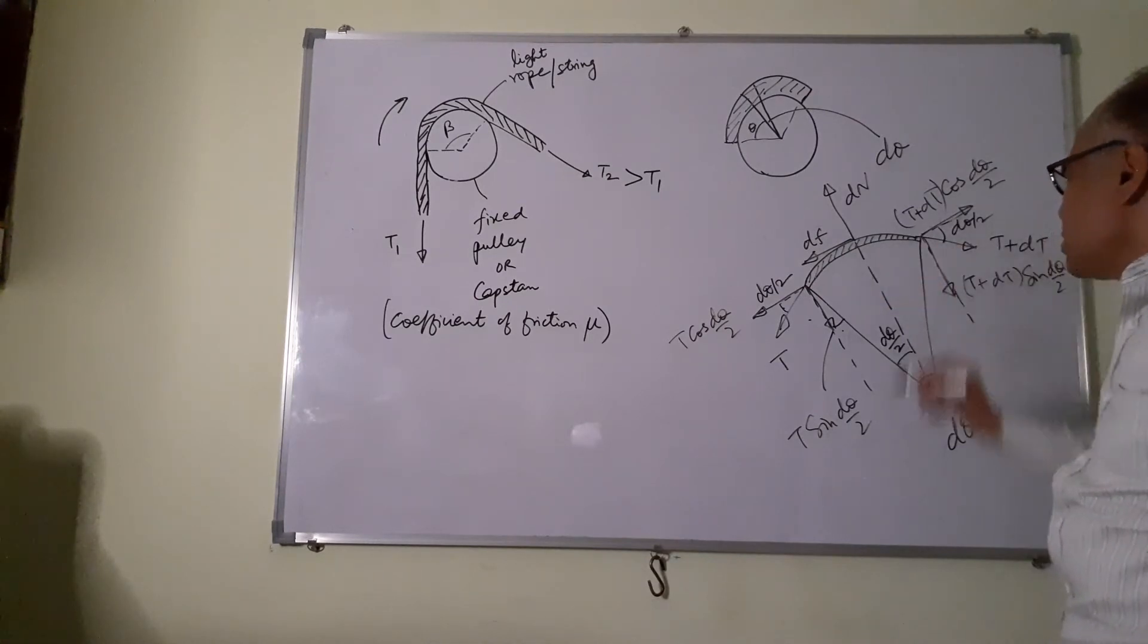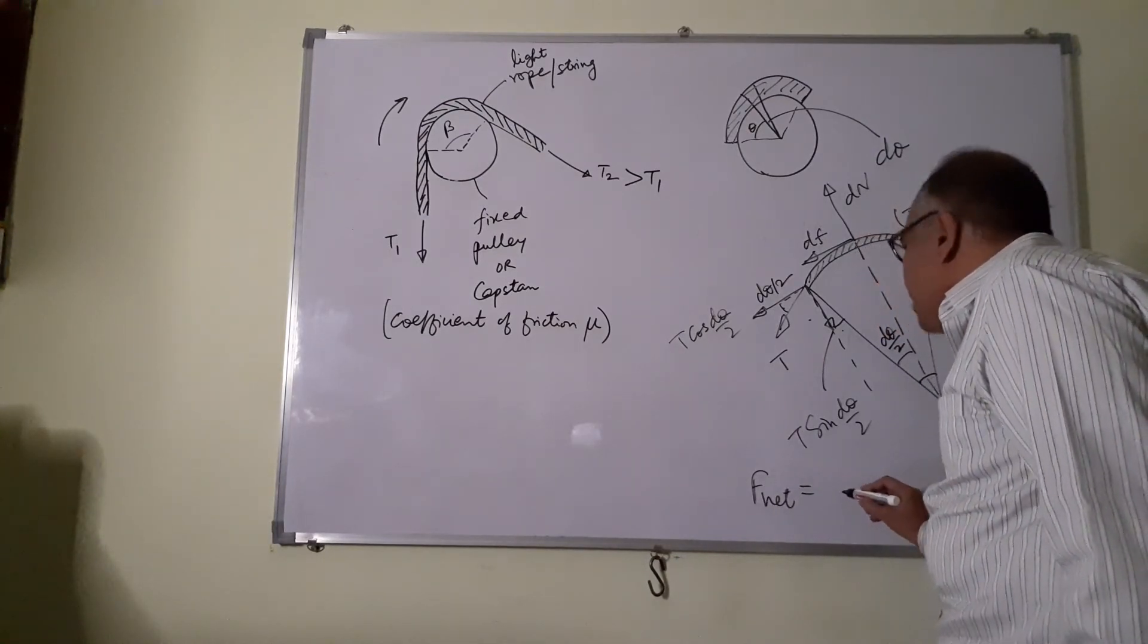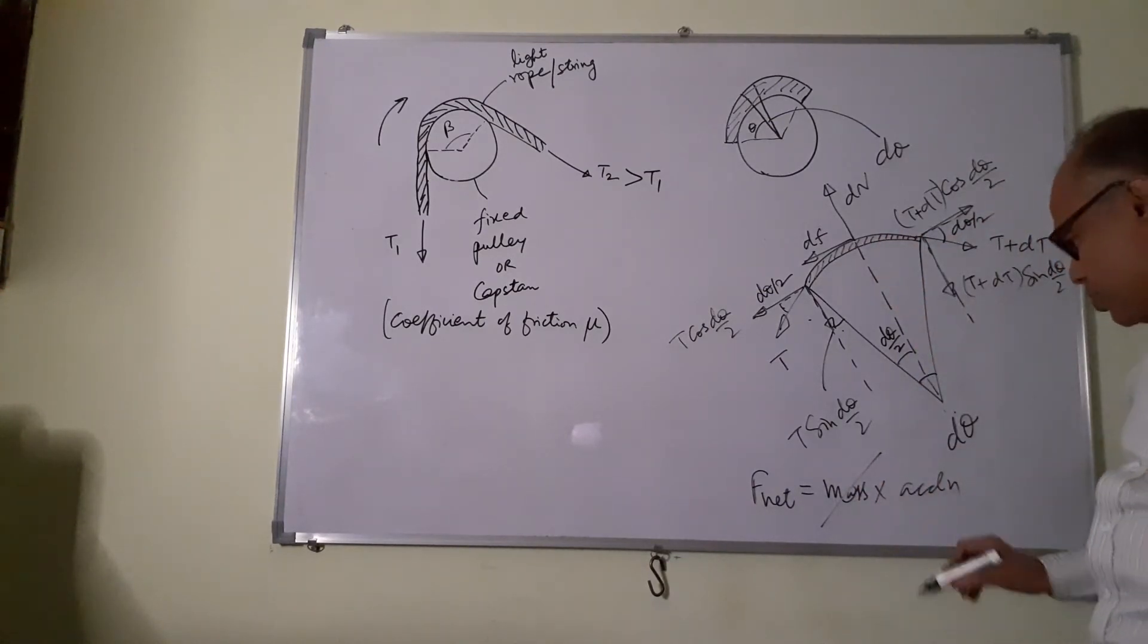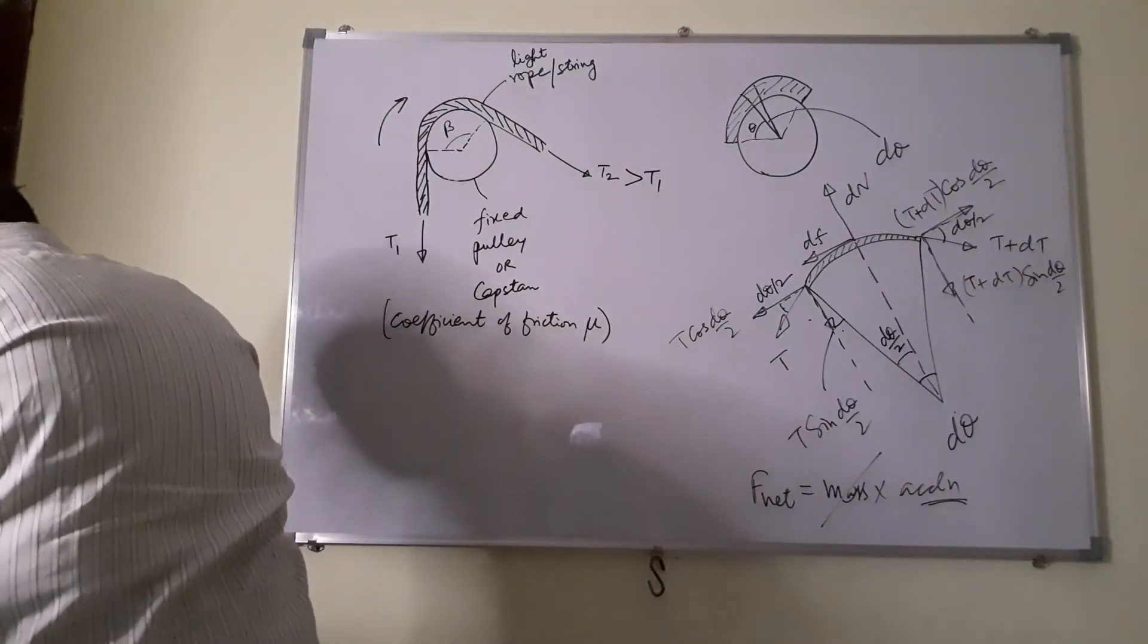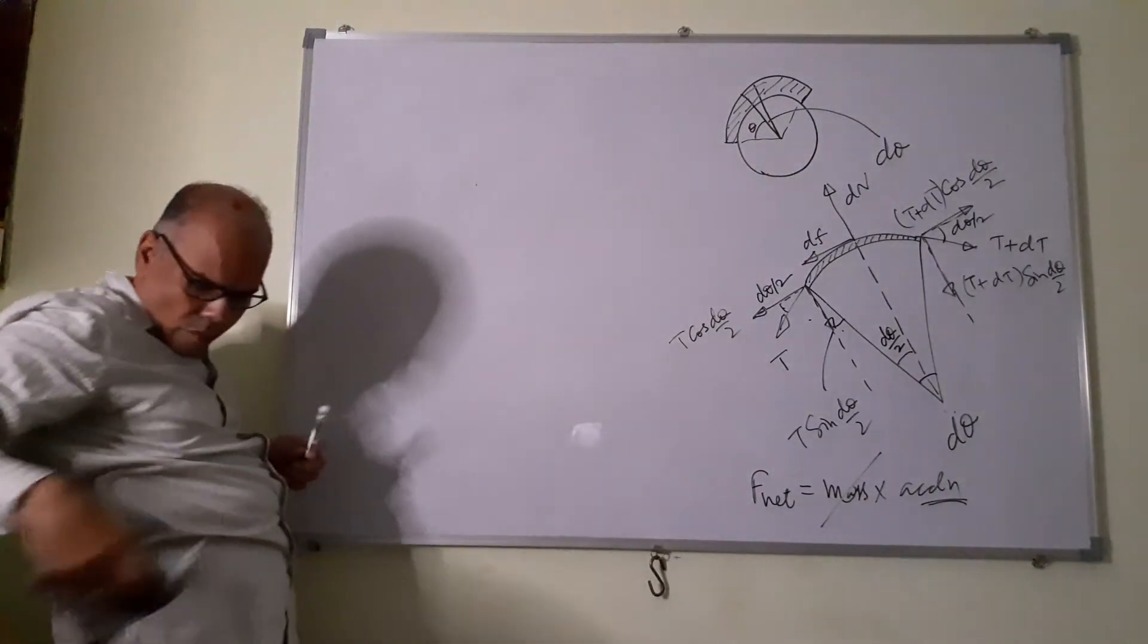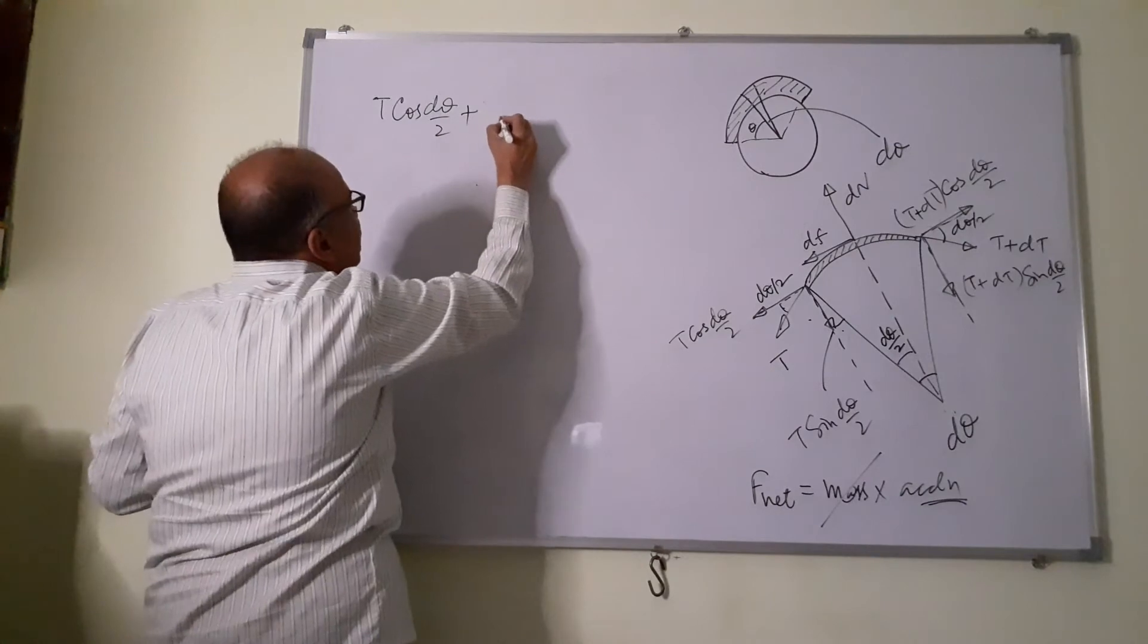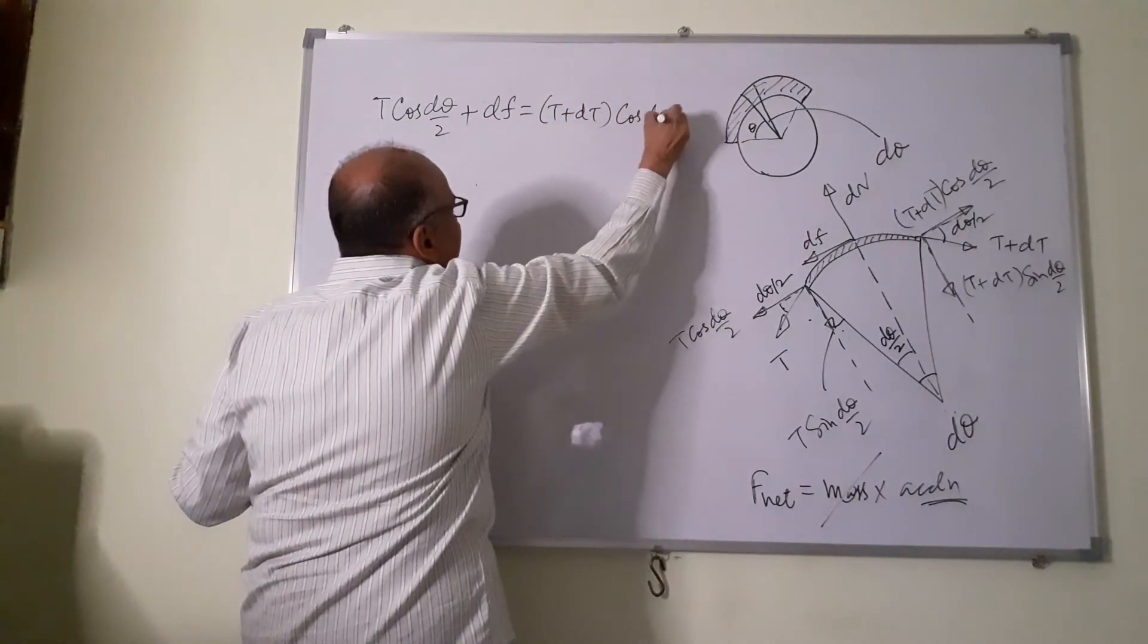Now this string, because it is an element and it is having negligible mass, we know the net force on it must be zero even if it is accelerating. F net is mass into acceleration. If the mass is negligible for this element, the net force must be zero even if it is accelerating. So let us equate the forces.